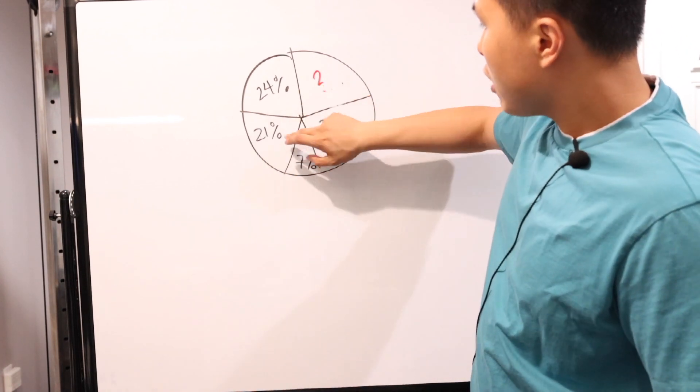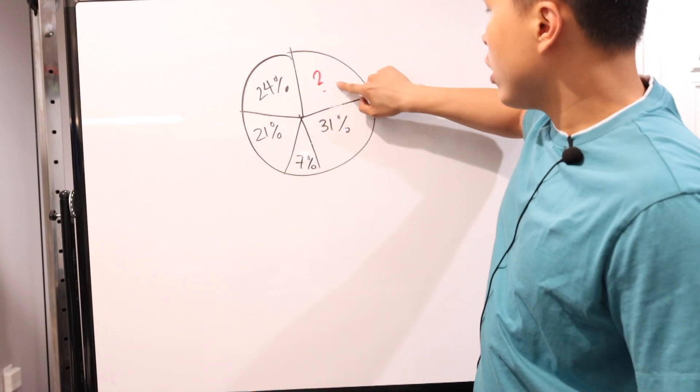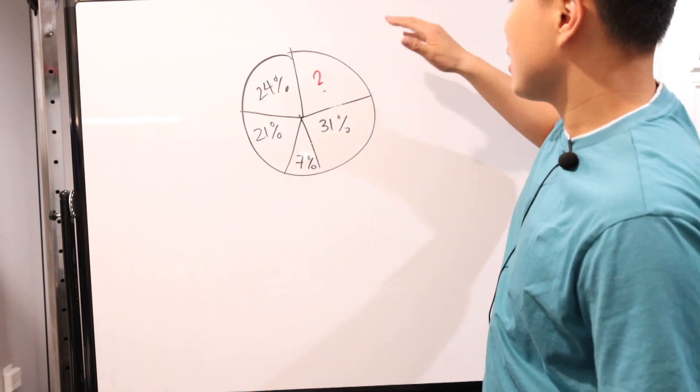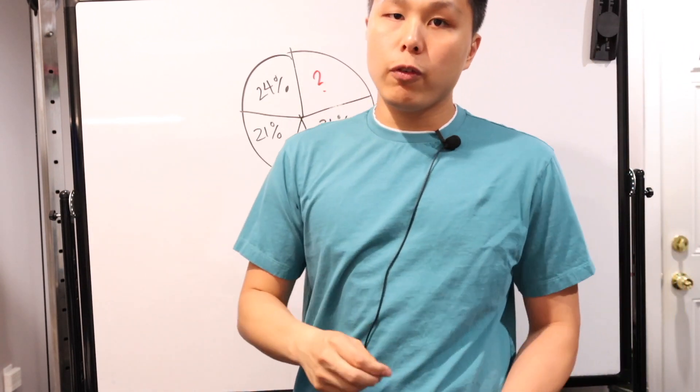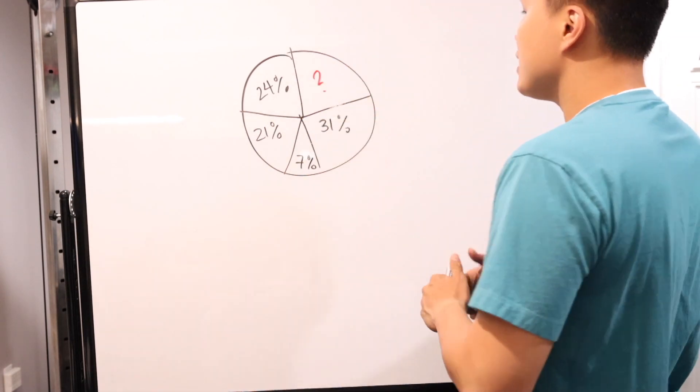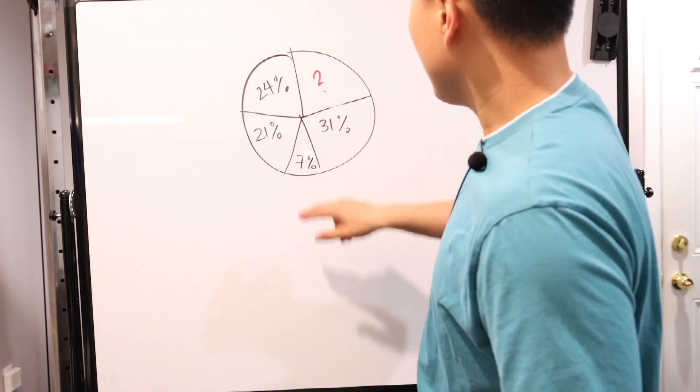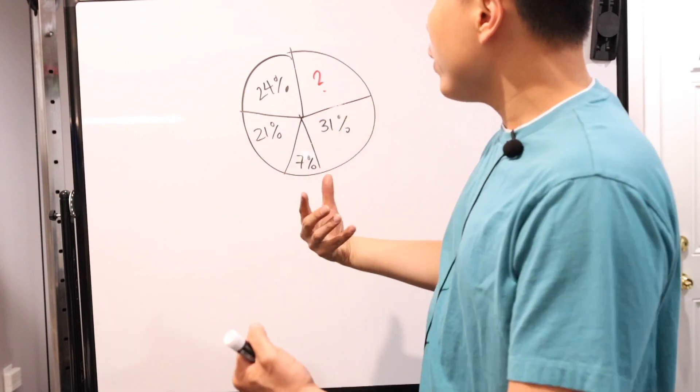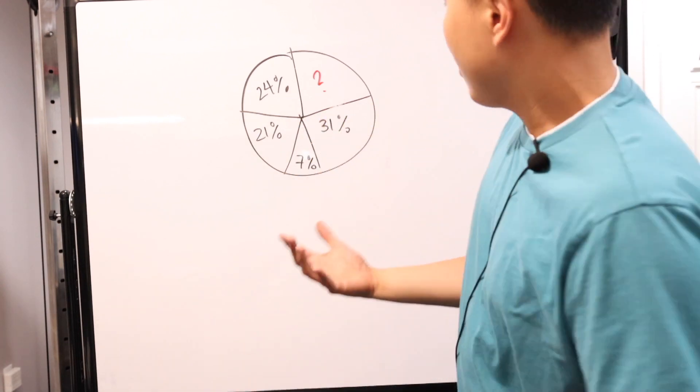Now, the lovely thing about pie graphs, or circle graphs or whatever name you want to go by, is that the entire circle represents a hundred percent. That's the entire population, entire basically consideration of all variables. So in this case, what happens is, well, they give you all these information and they have one of them. I forgot which farm it is, but then basically they want to ask you, what is that missing information?